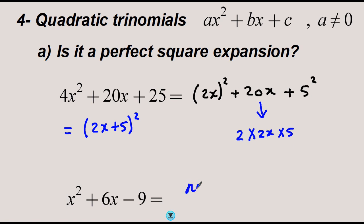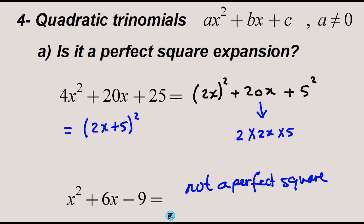It is not a perfect square expansion. The reason is, it is true that the square root of 9 is 3, but the problem is with this minus sign. For perfect squares, the constant term is always positive.